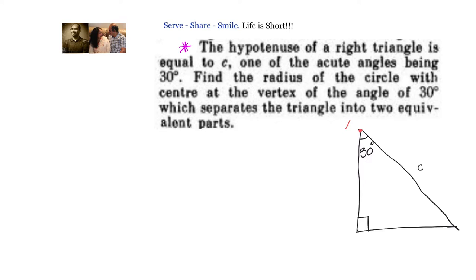If we label the vertices as A, B, and C, we want to find the radius of the circle which will divide the triangle into two equal parts. Let us say this is the radius — center is A. We have drawn an arc. The circle will be going in this direction, but we are interested only in this part which is dividing the triangle into two equal parts.